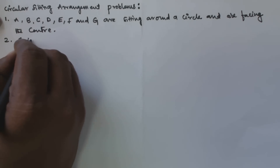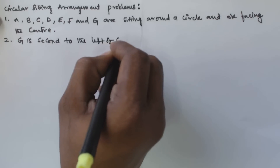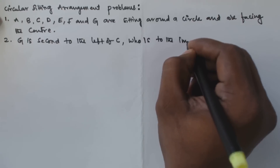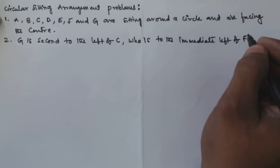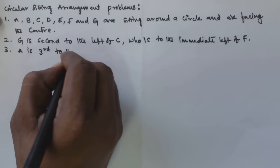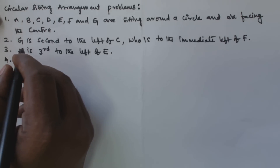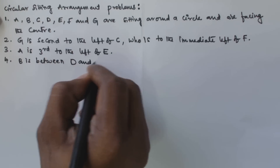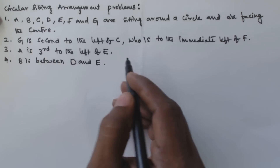The four statements are: first, G is second to the left of C, who is to the immediate left of F. Third, A is third to the left of E. And fourth, B is between D and E. Based on these four statements we have to establish the circular sitting arrangement.